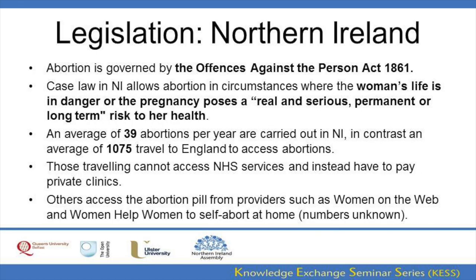In Northern Ireland, abortion is also governed by the Offences Against the Persons Act of 1861. Case law allows for abortion in limited circumstances, and the data shows that on average 39 abortions per year are carried out in Northern Ireland on the NHS. In contrast, an average of 1,075 travel to England to access abortion. Those travelling cannot access NHS services in England and must pay private clinics. Others are thought to access the abortion pill from online providers such as Women on Web and Women Help Women, and self-abort at home.